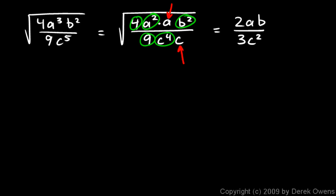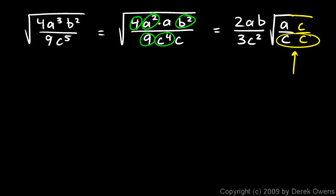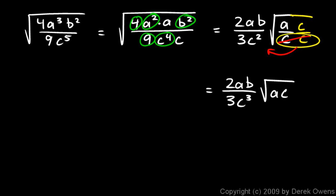So we'll have 2ab on top and 3c squared in the denominator. What's left under the radical is the a on top and the c below, so we have times the square root of a over c. Now again you're not supposed to leave fractions under the radical, so I'm going to multiply by c over c. That c squared gets square rooted and comes out as another c in the denominator. So my answer is 2ab over 3c cubed, times the square root of ac.